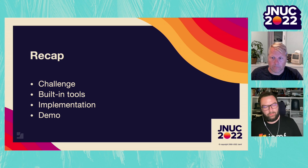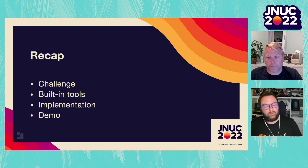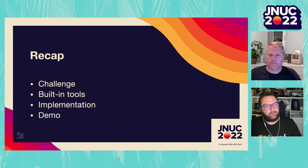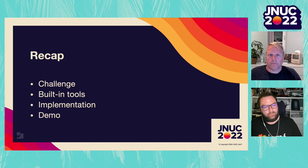Let's do a quick recap of what we've discussed. We had a challenge: things are happening in the company that we are not always aware of, and we need to take action based on what is happening — we can't do it manually, so let's automate. We discussed the built-in tools: the Jamf Pro API on one side, and Azure with its many built-in tools on the other. Then we looked at the implementation of this automation workflow, where someone is disabled and all their devices are locked automatically.